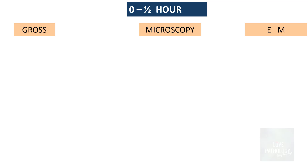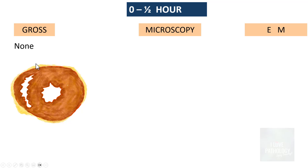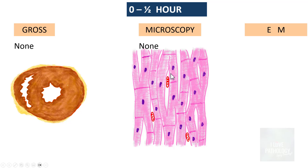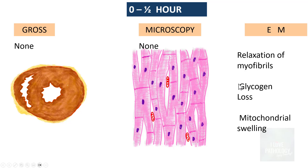Let us get into the most important part: the morphological features of myocardial infarction. We will see the sequence of events starting from 0 to half an hour. In the first half an hour, grossly there are absolutely no changes — you cannot identify any obstruction. Microscopically also there are no changes. All changes, if at all, are found on electron microscopy, where you find relaxation of myofibrils, glycogen loss, or mitochondrial swelling — features of reversible injury.